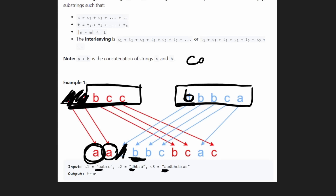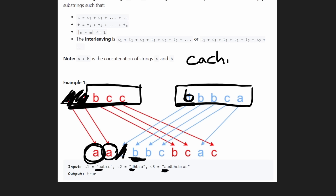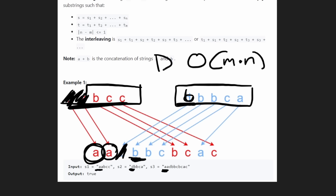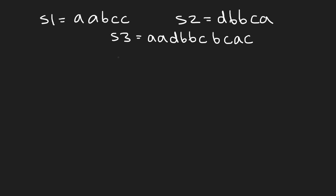It turns out we can use a dynamic programming technique called caching, where we can eliminate a bunch of repeated work. The time complexity of the solution can actually be broken down to M times N, where M is the size of one string and N is the size of the other. You can also do a true dynamic programming solution that gives the same time complexity — I'll explain both.